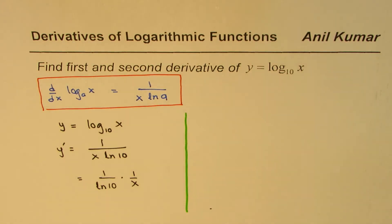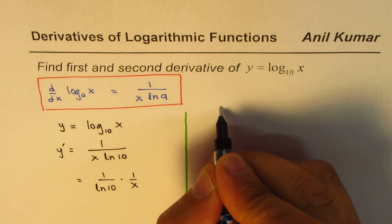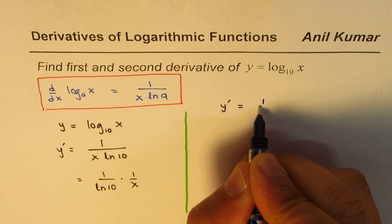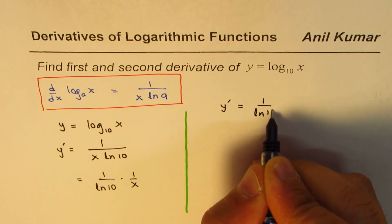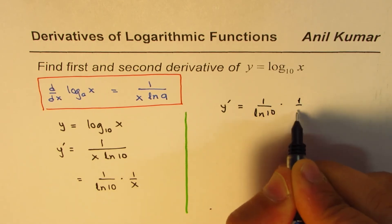Now, let's find the second derivative of this. So we know the first derivative, this is y dash or y prime, is 1 over ln 10 times 1 over x.